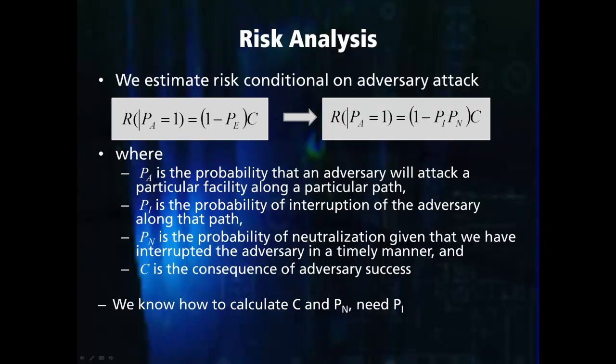Earlier in this course we explained that the DEPO process is based on performance data and that the probability of attack is not a measurable value. We will now make a substitution to the risk equation and define the effectiveness of the security system as the product of the probability of interruption and the probability of neutralization. The probability of neutralization was described in the previous section and is the probability that the adversary is neutralized given that they are interrupted. To calculate risk we therefore need to be able to calculate the probability that the adversary is interrupted.